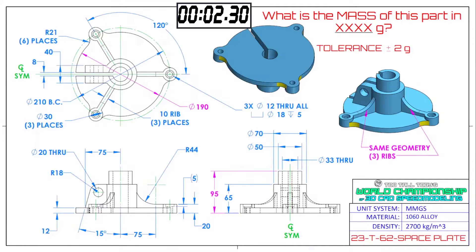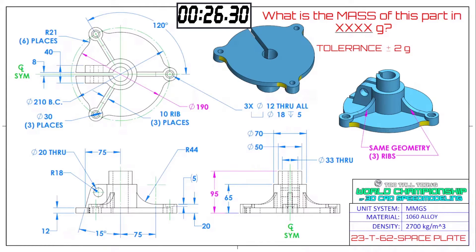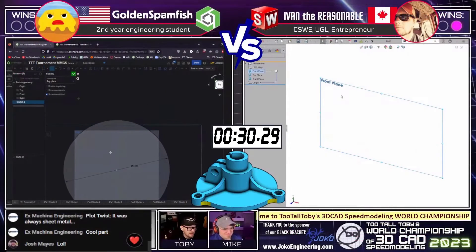What is the mass of this part in grams? The tolerance is plus or minus 2 grams. The runners are grabbing a screen capture of this part. It's called a space plate because it's used in a spaceship somewhere. You can see this part's made of 1060 aluminum alloy, and the rib geometry is the same for all three. Looks like both runners have grabbed the screen capture and are jumping into their CAD.